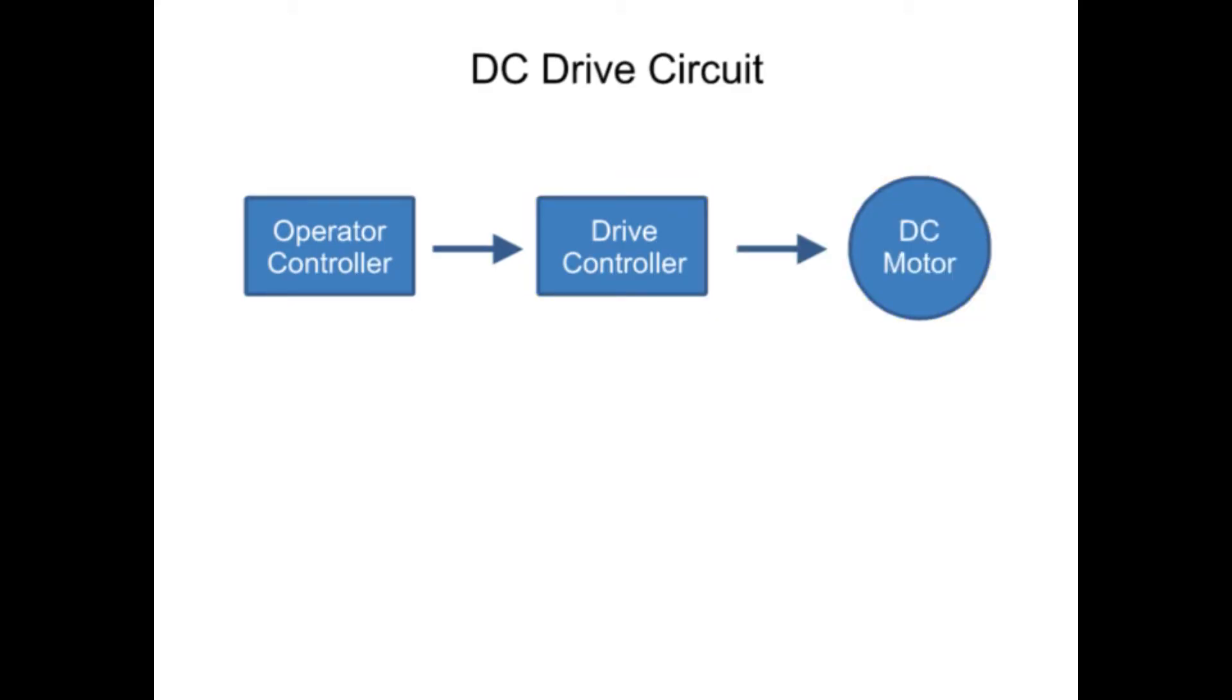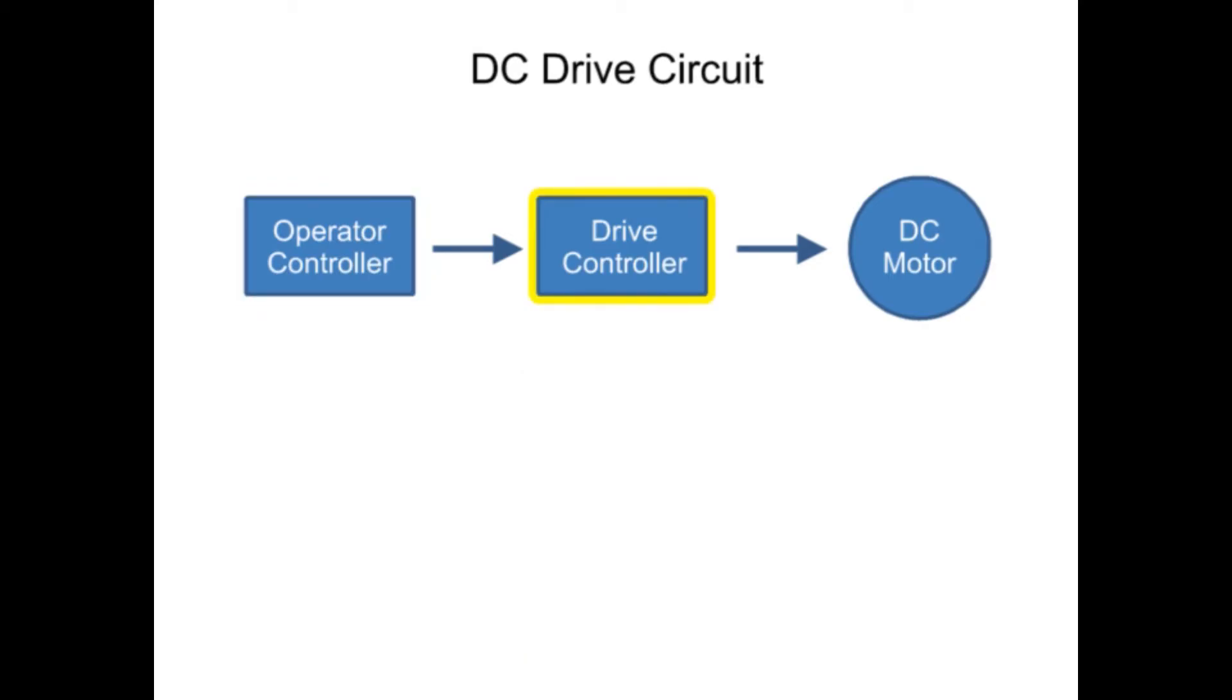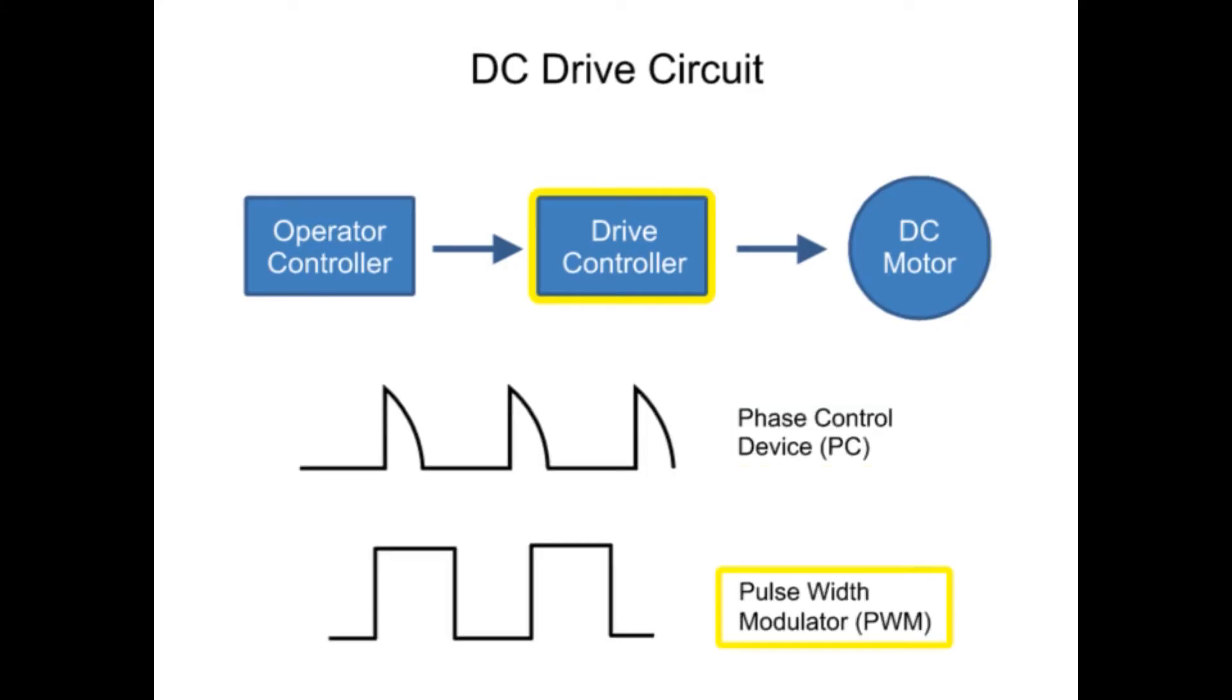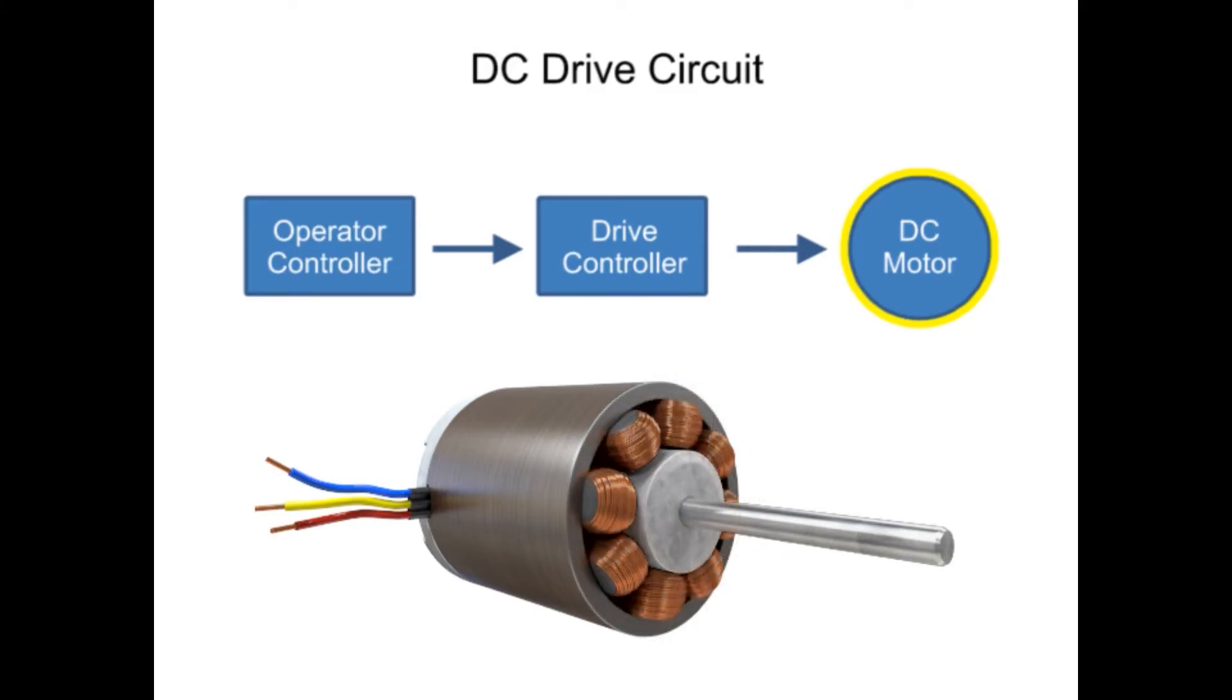One of the functions an operator controller provides is a method for altering the speed of the motor. The drive controller will regulate the input by means of either a phase control device or a pulse width modulator. And the DC motor is an electrical device that needs to be adjusted to perform at various speeds.